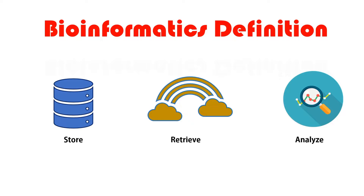There are various definitions of bioinformatics, but according to EMBL — the European Molecular Biology Laboratory — they define bioinformatics as the science that helps to store, retrieve, and analyze a large amount of biological information. Store means we can store our biological information in biological databases, retrieve means we can fetch it from those databases, and we can analyze it using various bioinformatics applications or algorithms to create meaningful data.